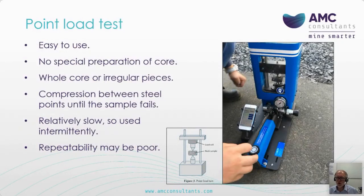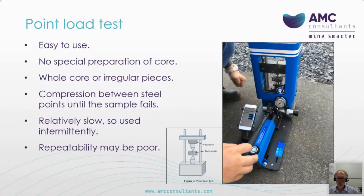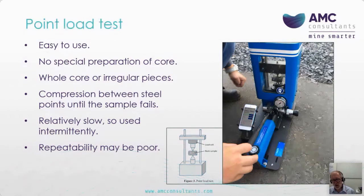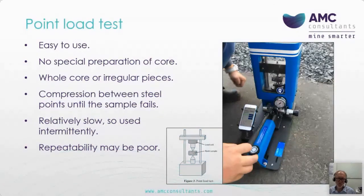The point load test is a simple test with low cost equipment where the sample is compressed between two steel platens and the pressure at failure is measured. It's easy to execute on an exploration site but relatively slow, so it tends to be used at widely spaced intervals down the drill holes. Point load data may already be collected by geotechnical engineers, making it a potentially free source of geometallurgical data. Point load index is often considered a measure from which comminution behaviour and process plant throughput can be predicted.